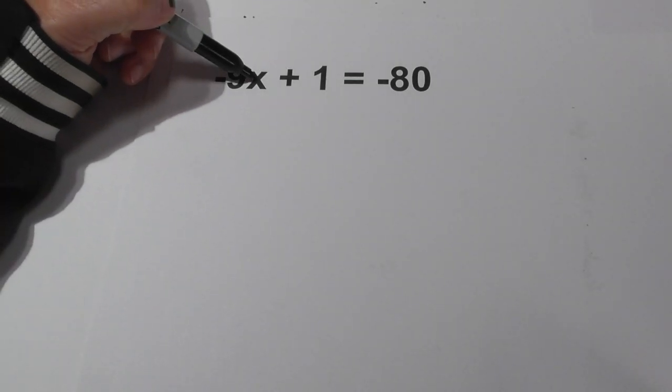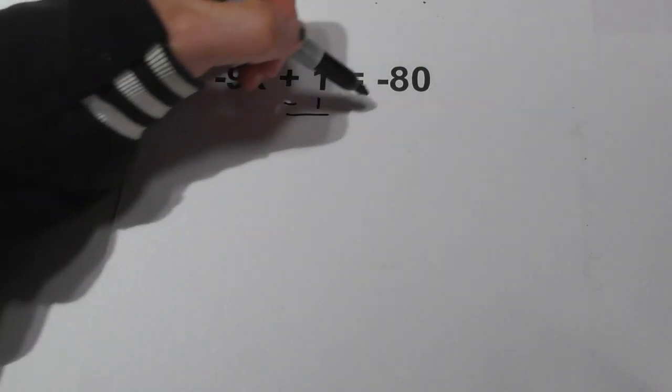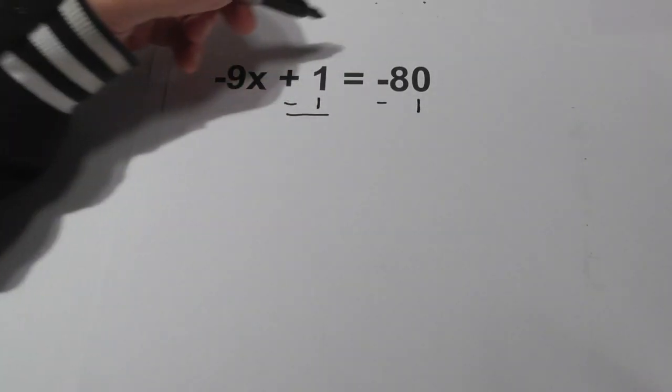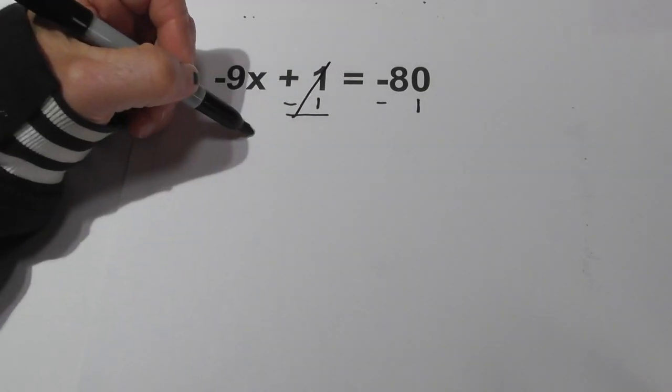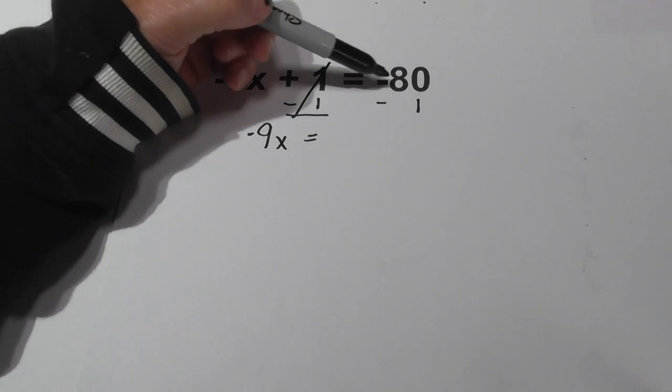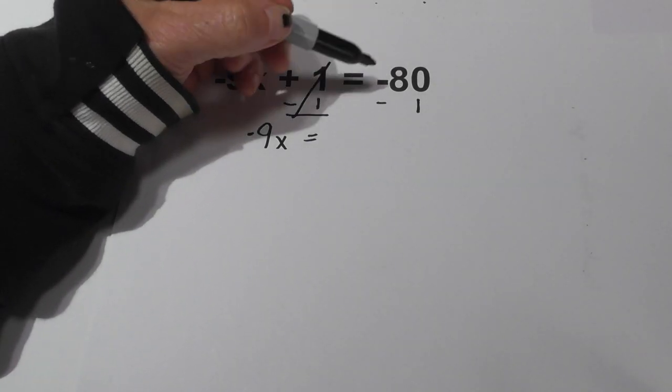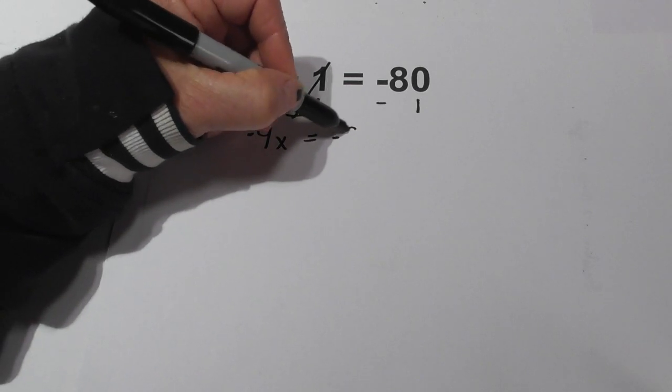Remember I want to isolate the x. I'm going to start by subtracting 1 from both sides. These cancel, bring down the negative 9x equals. Now be careful here because you have two negatives, so you're not subtracting, it's like adding. So it's negative 81.